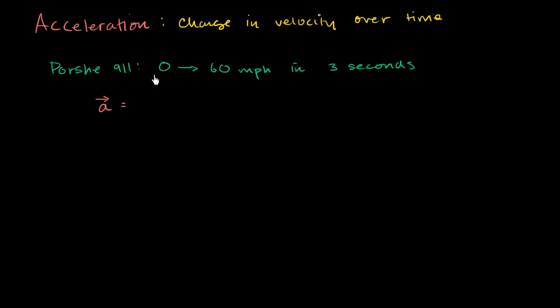So the acceleration here, and we're just going to assume that we're going to the right, 0 miles per hour and 60 miles per hour to the right. So it's going to be change in velocity. Let me write it down with different notation, just so you can familiarize yourself if you see it in a textbook this way. So change in velocity, this delta symbol right here just means change in, change in velocity over time. And it's really a change in time, but we could just write time here. This 3 seconds is really a change in time.